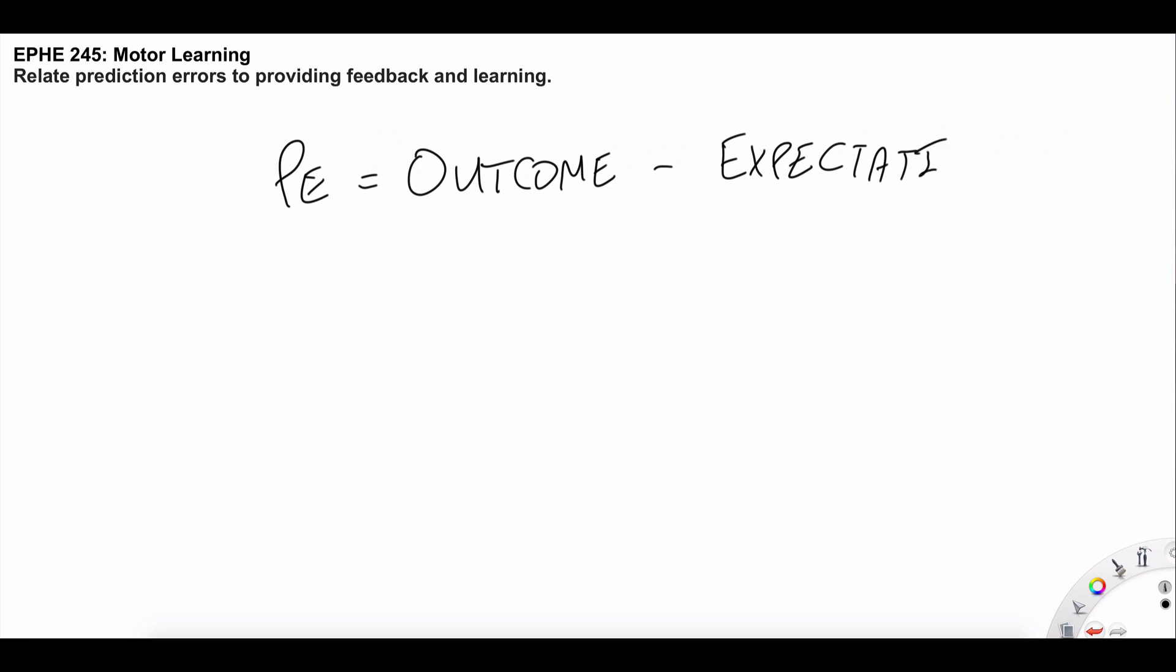With this in mind, this is an easy way to relate prediction errors to feedback and learning in a sport environment. For instance, imagine that you shoot a basketball. The motor system has an expectation of what's going to happen, and there's an outcome. You hit or you miss.